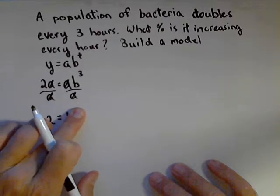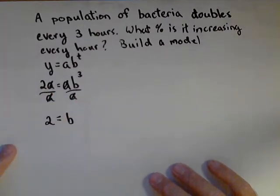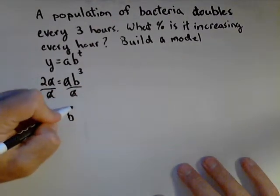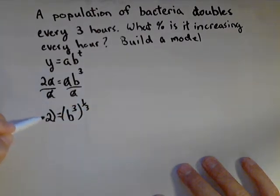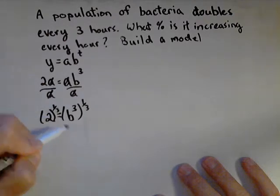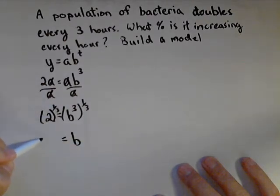...excuse me, B to the three, I'm getting a step ahead, equals B cubed. Now to solve this for B, I'm gonna take both sides to the one-third, and I get B equals two to the one-third.